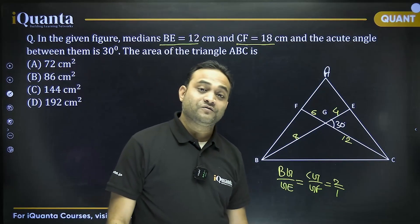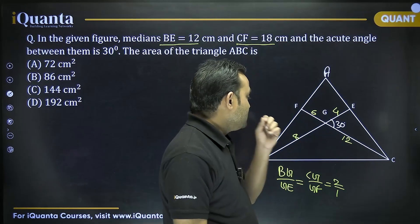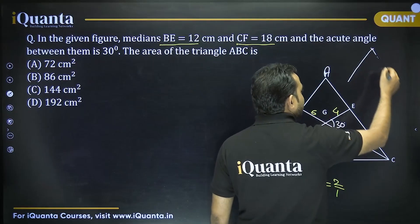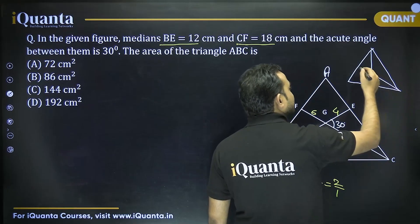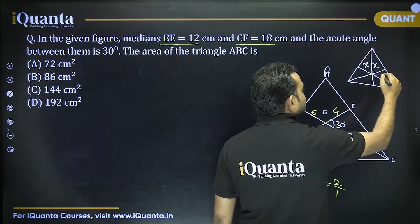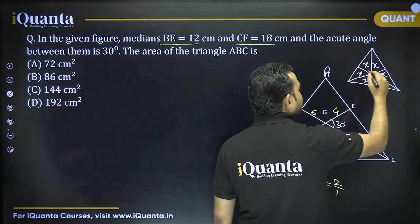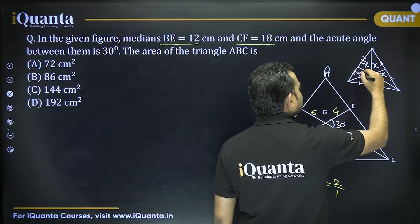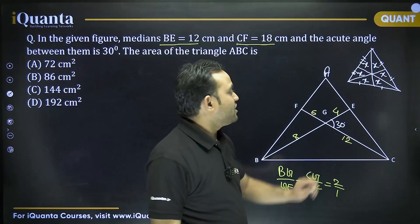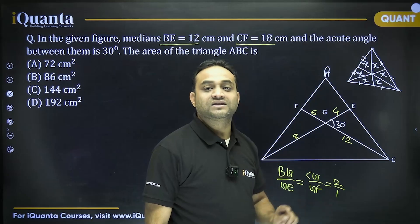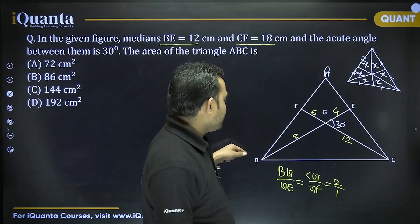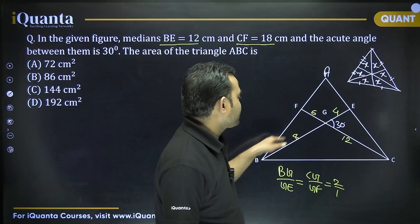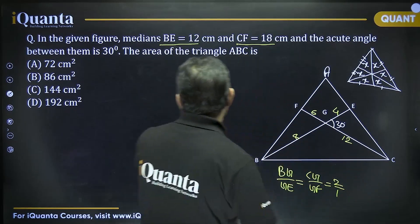Now we need to find the area of the triangle. An important property is that the medians and centroid divide a triangle into six smaller triangles of equal area. So if we find the area of any one of these triangles — such as triangle BGF, CGE, or BGC — and multiply by 6, we get the area of triangle ABC.